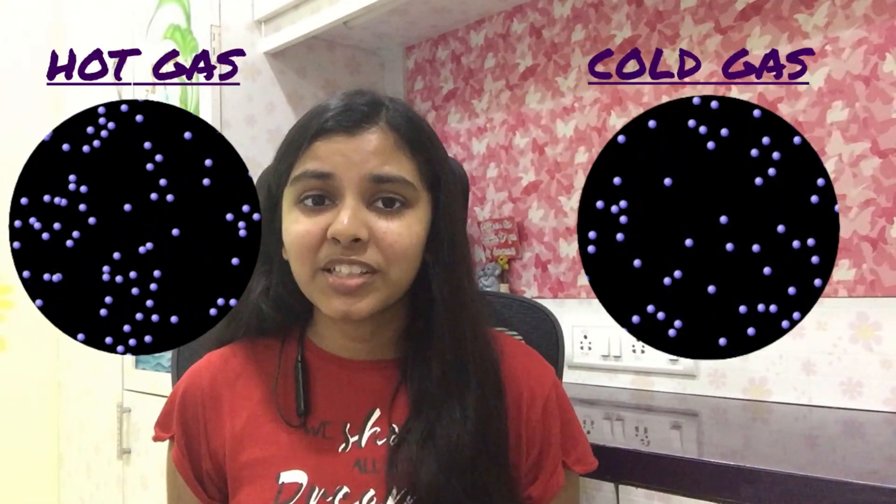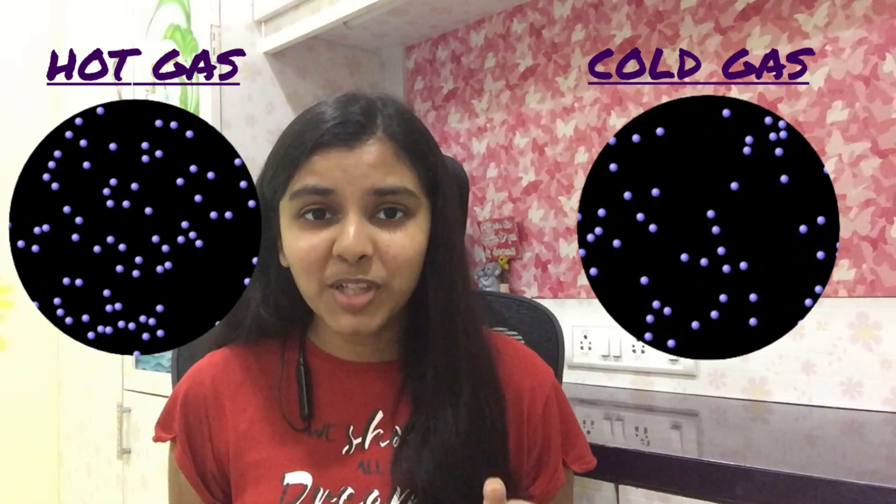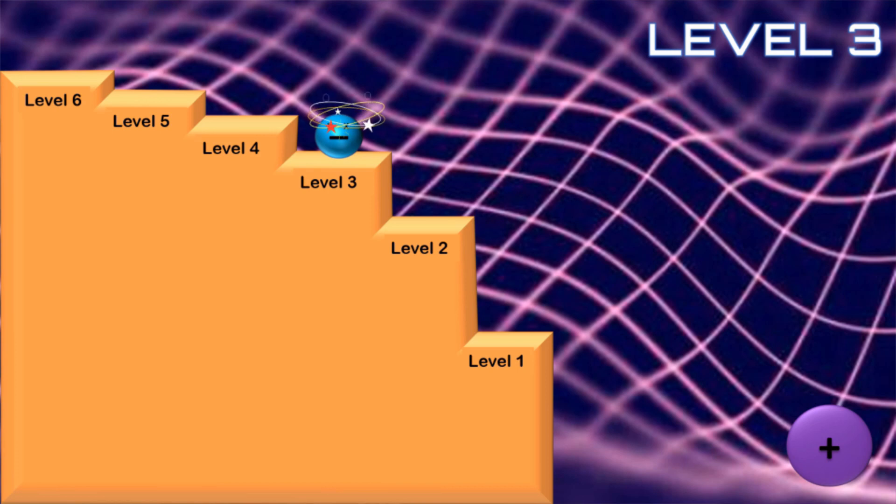Spectroscopy can also tell us about the temperature of a gas. Particles of hot gases bump into each other much more than in colder gases, so the electrons have been knocked into higher orbits. Kind of like how you're much more likely to be disheveled in a mosh pit than when you're walking in a line with social distancing. By knowing which orbit or level the electron was originally in, we can find the temperature of the gas.